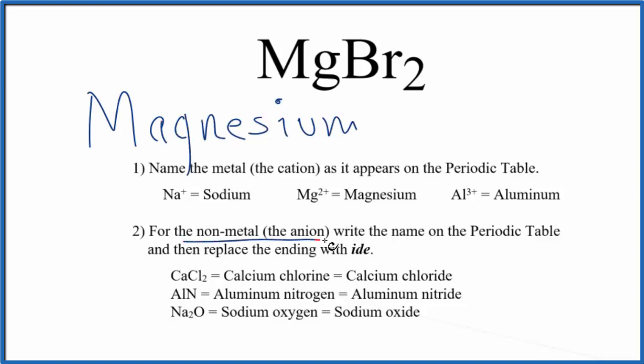Then we can write the name for the non-metal, that's the Br, the bromine. We'll write it with a lowercase b, just as it appears on the periodic table. But then we'll replace the ending with IDE. So we'll replace the I-N-E with I-D-E.